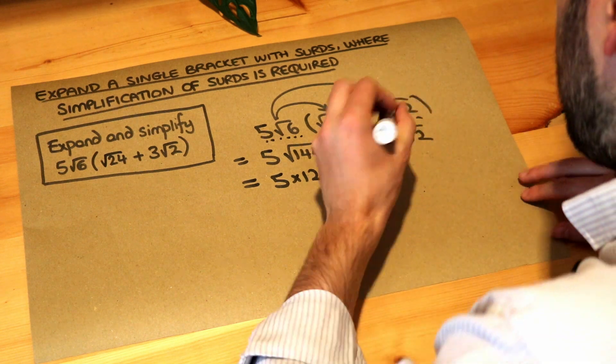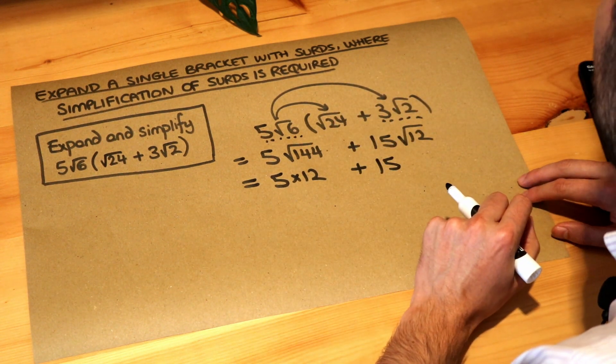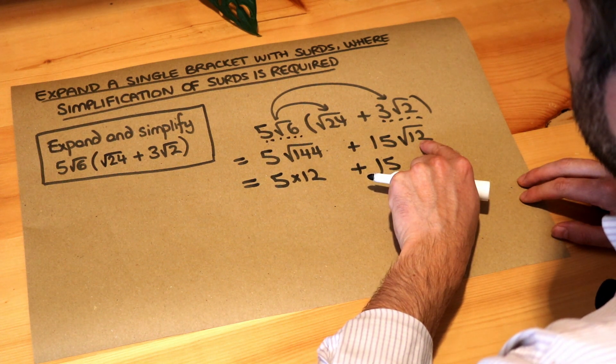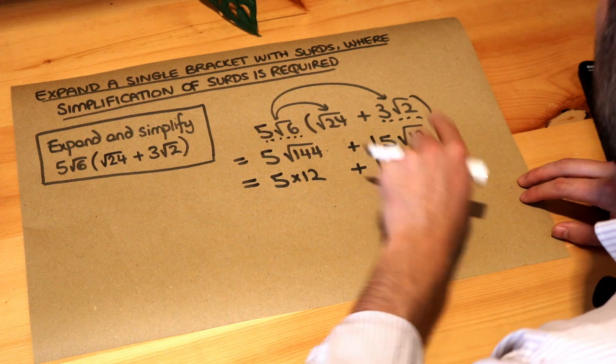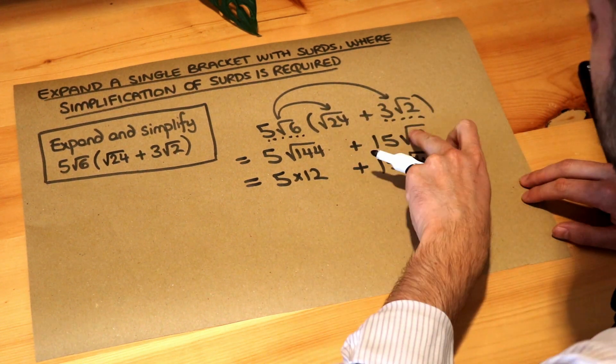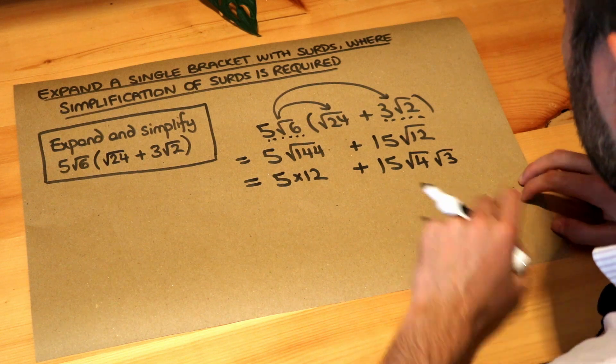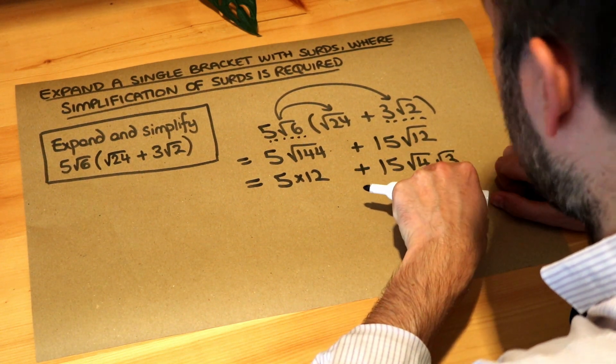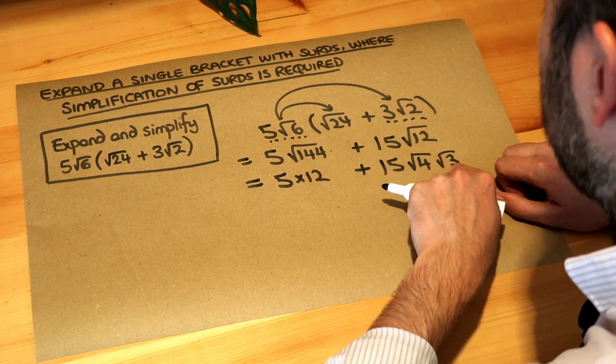We've got plus, and root 12 we know how to simplify. Remember we find the biggest square number that goes into 12. Well, 4 is a factor of 12, so we write root 4 root 3. We just need to find a square number that goes into it, and 4 times what is 12, it's 4 times 3.